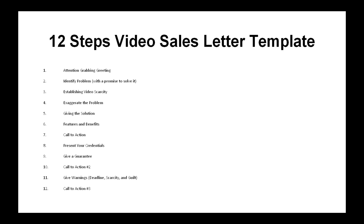Step six: features and benefits. From here, you simply want to provide the features of your product and, even more significantly, the benefits that those features will bring about. Step seven: call to action. This is the part where you tell your viewers what they need to do next. Most of the time it goes like, 'Go now, click below and order.'